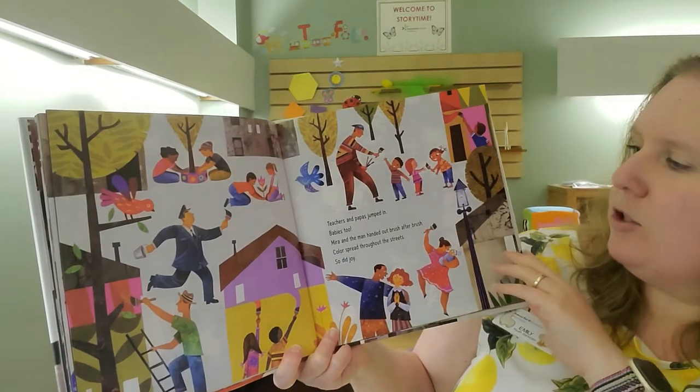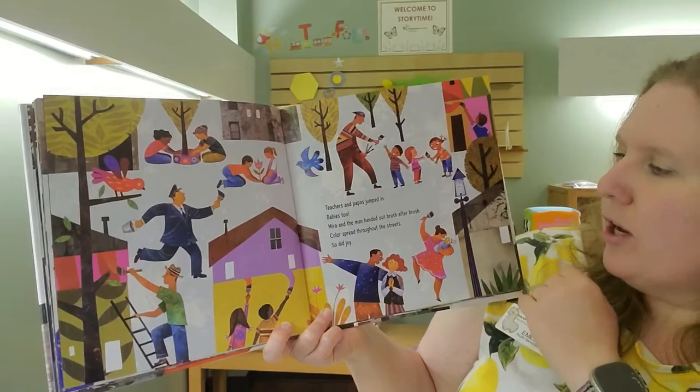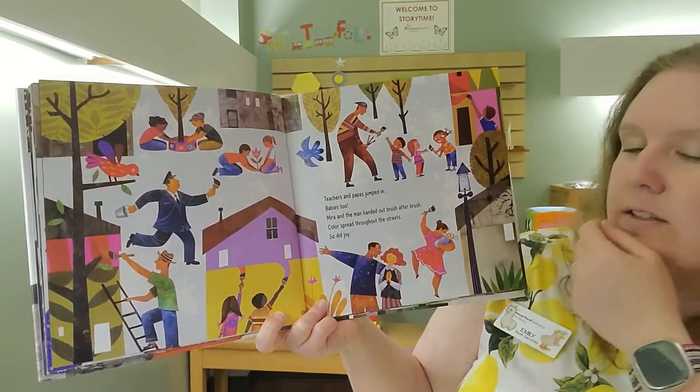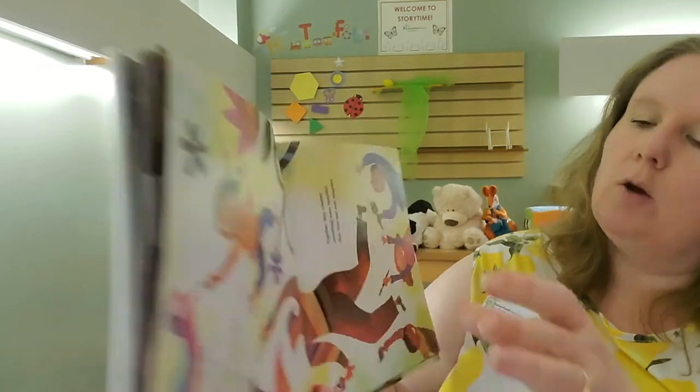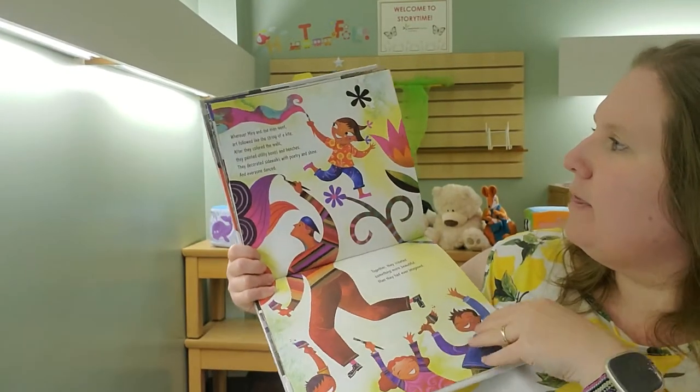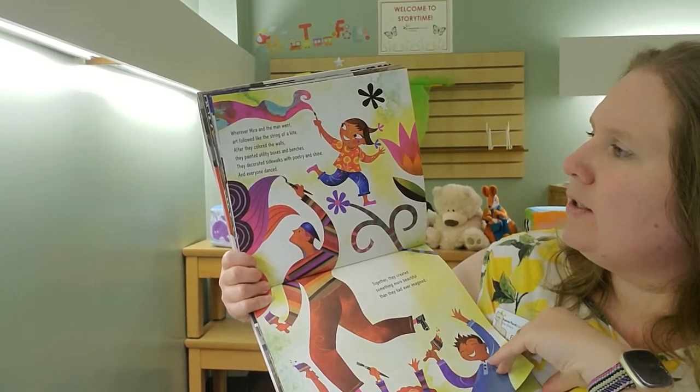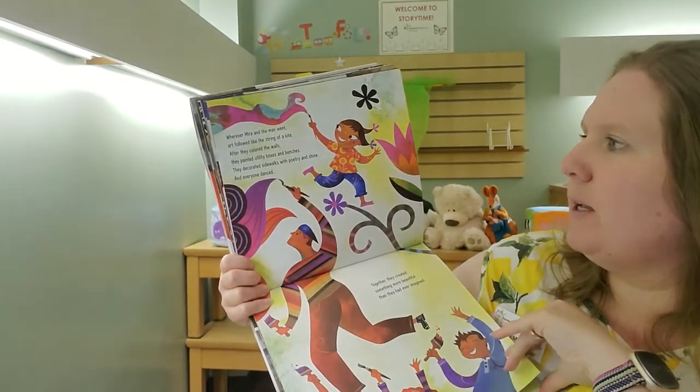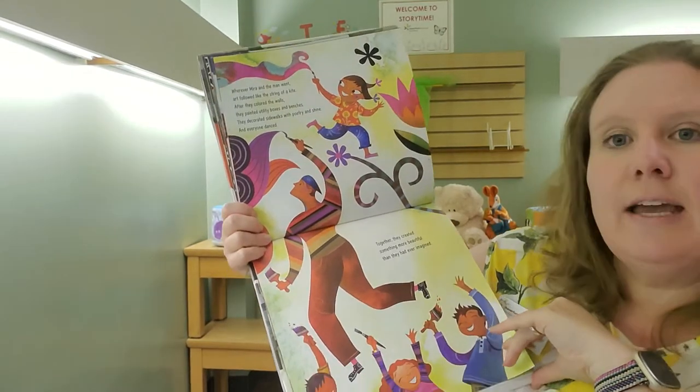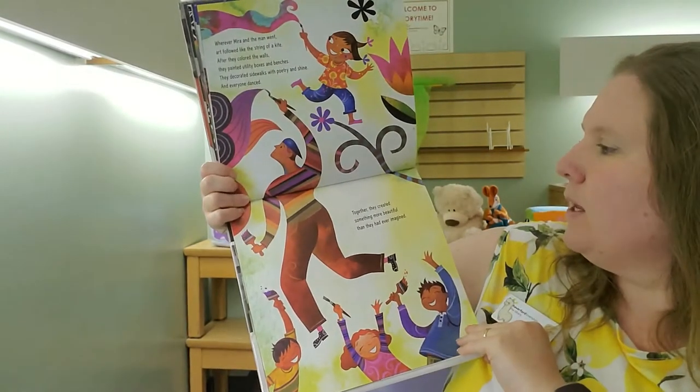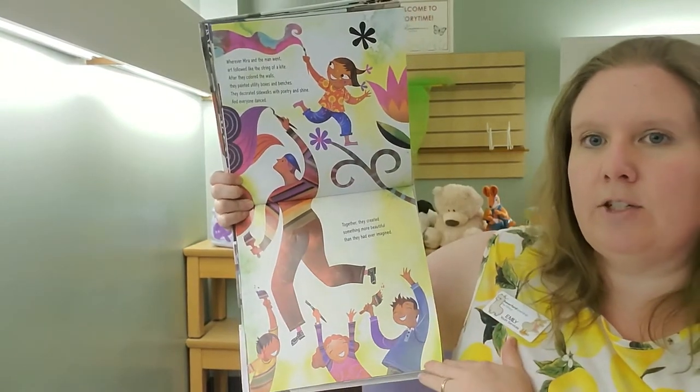Teachers and Papas jumped in. Babies too! Mira and the man handed out brush after brush. Color spread through the streets. So did Joy. Wherever Mira and the man went, art followed like the string of a kite. After they colored the walls, they painted utility boxes and benches. They decorated sidewalks with poetry and shine. And everyone danced. Together, they created something more beautiful than they had ever imagined.